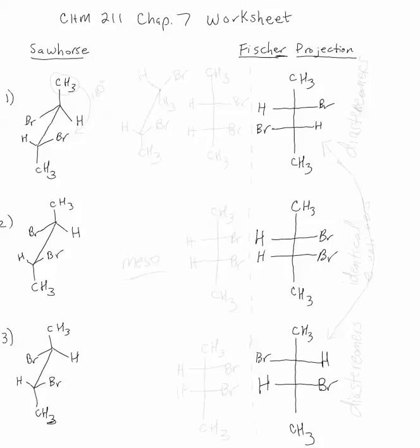Fischer projections are great for establishing and confirming those relationships, so what we need to do is take the sawhorse diagram and redraw it as a Fischer projection and then we can compare those side by side. Remember that with Fischer projection the vertical bonds represent bonds going away from us behind the plane of the paper. The horizontal bonds are the ones coming out towards us.